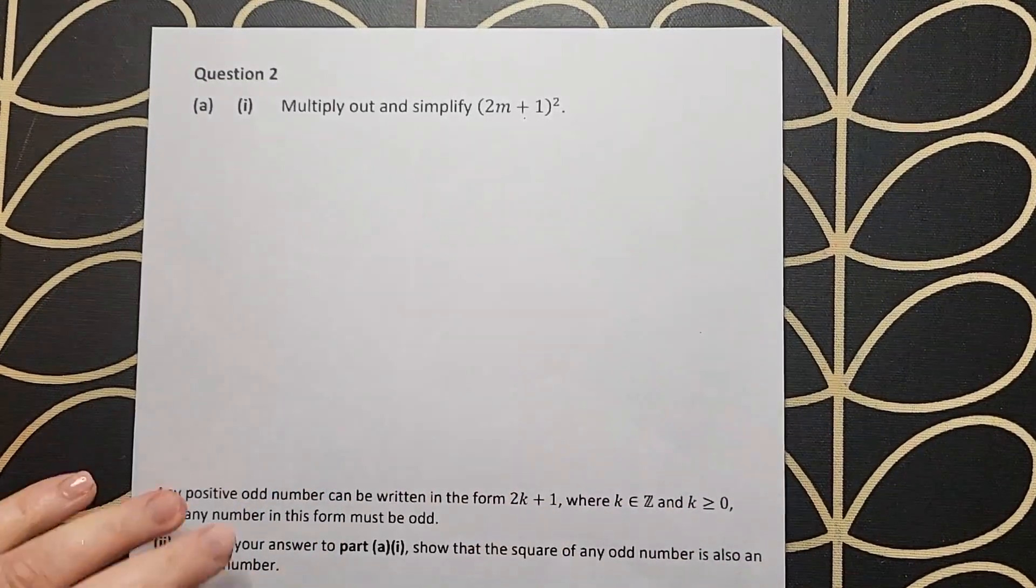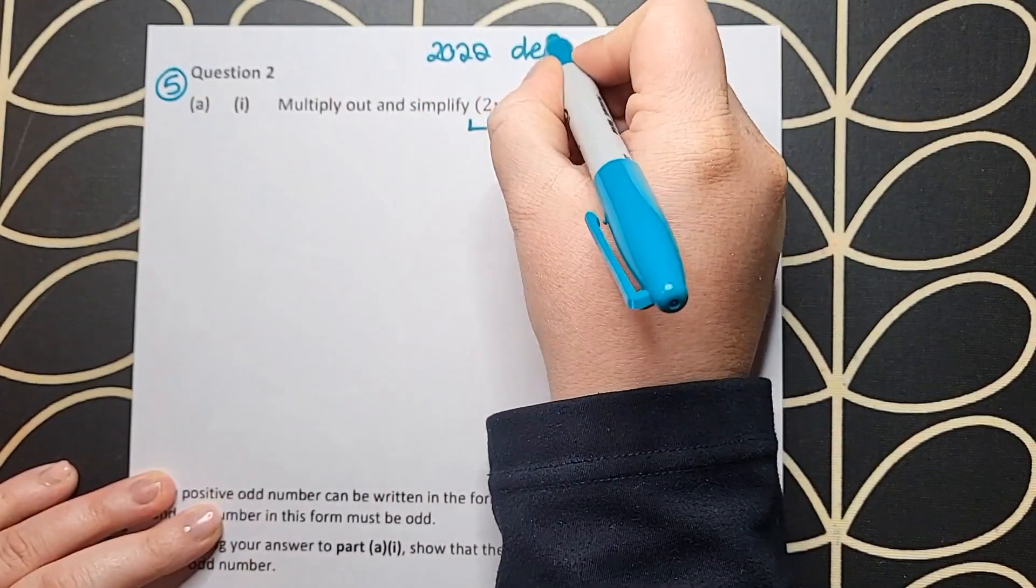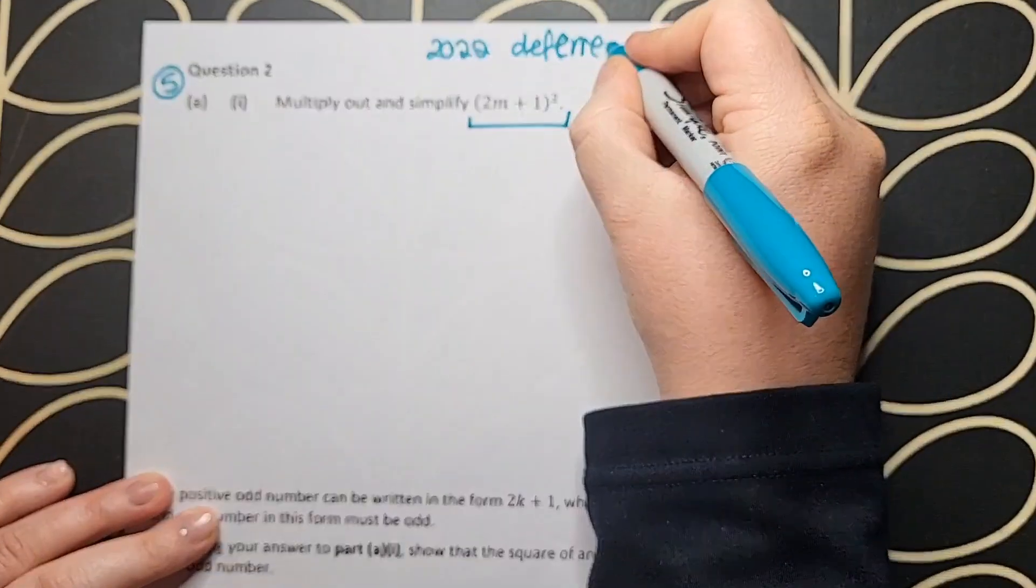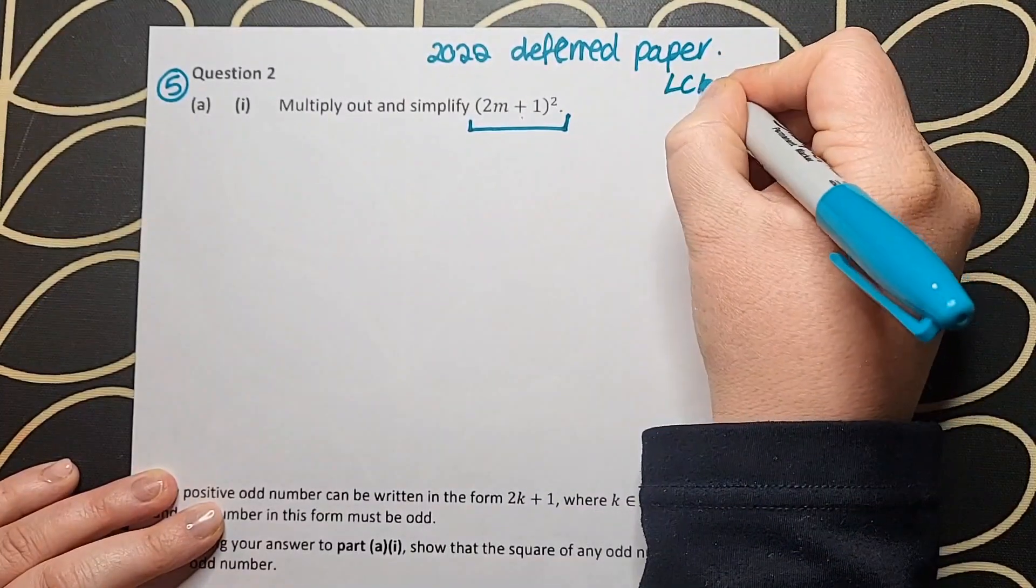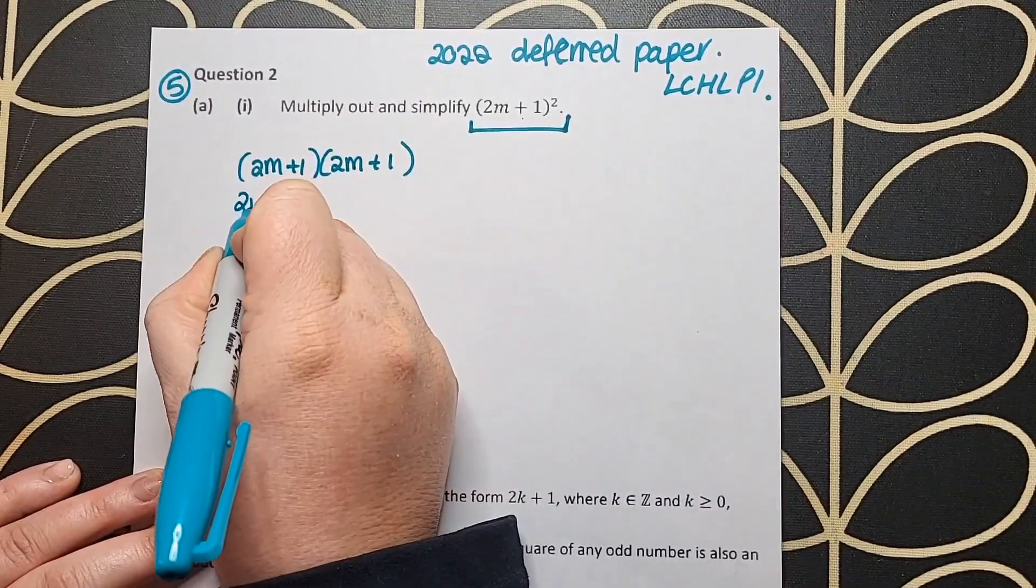Let's look at the 2022 Leaving Certificate Higher Level Paper 1 deferred paper. In part I, we're asked to multiply out and simplify (2m + 1) squared. This is a fantastic little starter question here, absolutely beautiful.